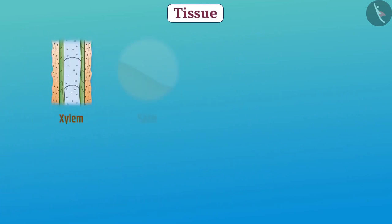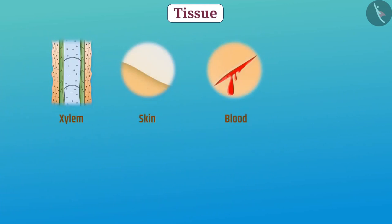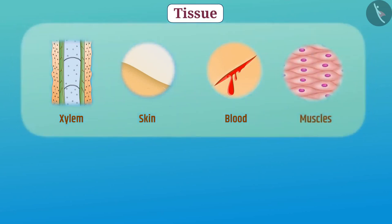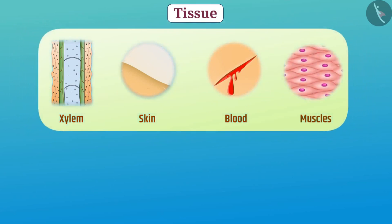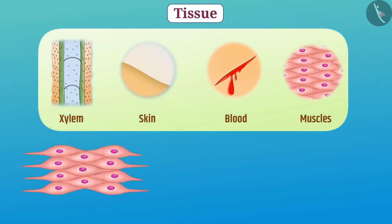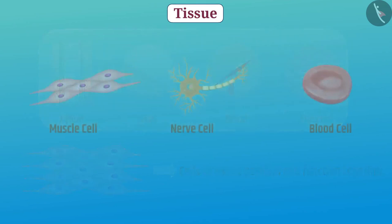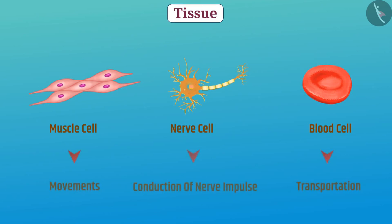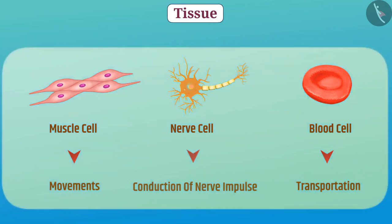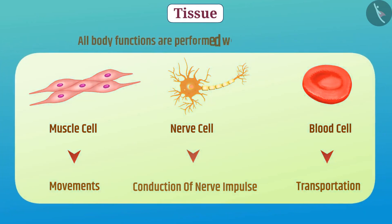This group of cells is called a tissue. For example, xylem, skin, blood, and muscles are tissues. All the cells of a tissue have the same shape and together perform one function. Due to the special organization of cells and the division of labor, all body functions are performed with high efficiency.